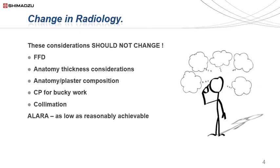But what shouldn't radiographers change? Here is a list of parameters that can easily be forgotten as an integral part of imaging: FFD, anatomy density and composition, bucky centering and collimation — these are often something that becomes an oversight to radiographers. However, not correctly attending to these factors leads to suboptimal imaging and negative feedback from radiologists.